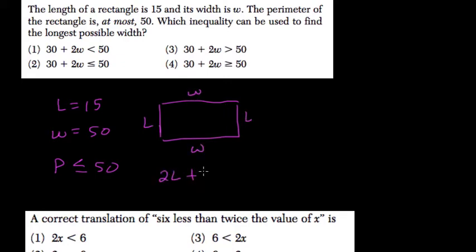So if we had two lengths plus two widths, it has to be less than or equal to the perimeter of 50.